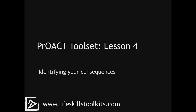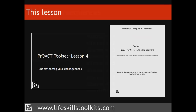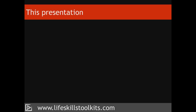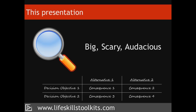Welcome to the PROACT Tool Sets Lesson 4: Consequences. This lesson covers the C, Consequences, in the PROACT decision-making process. Having identified our decision objectives and the various alternatives on which we will base our decision, we're ready to start making some choices. To do this, we first need to understand the consequences of selecting each alternative. The lesson consists of this presentation together with a lesson guide, and we'll look at how to identify and describe a consequence and then how to build a consequences table.